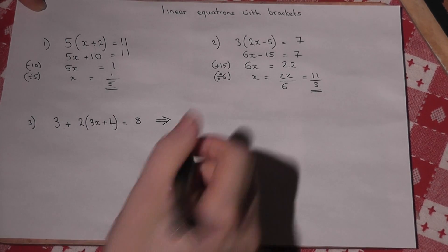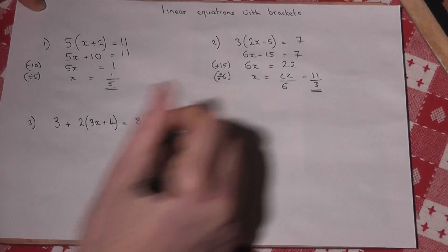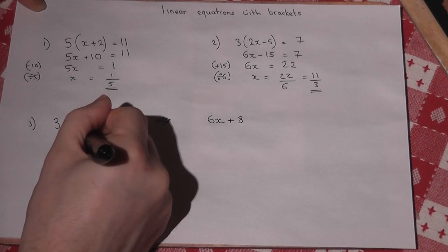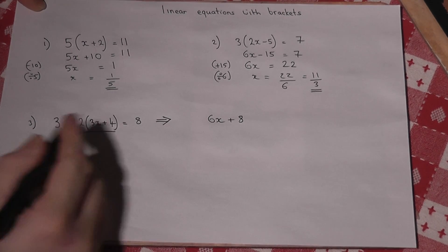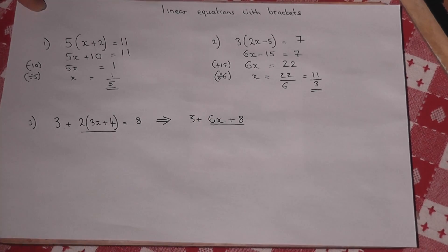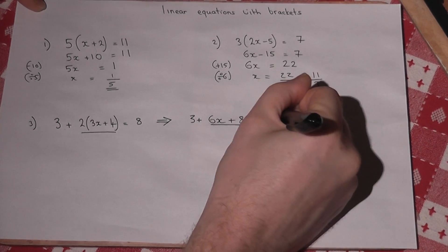2 times 3x is 6x. And 2 times 4 is 8. That's the bracket part worked out. There's also a 3 there. So it's 3 plus this bracket part. And that equals 8.